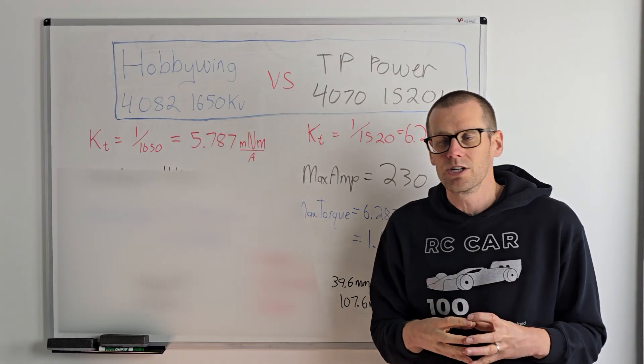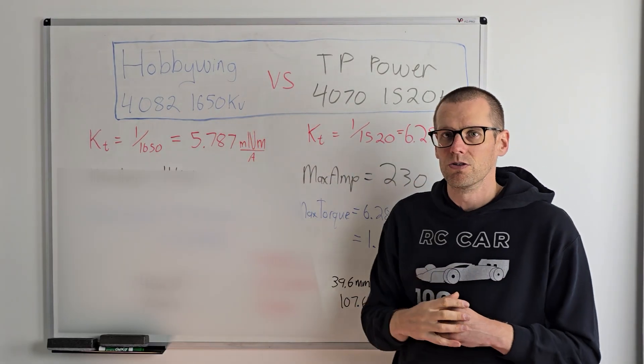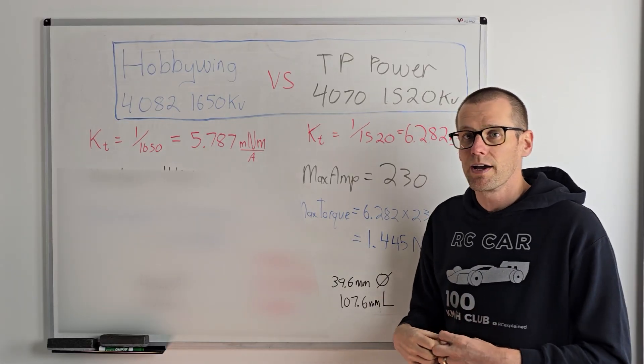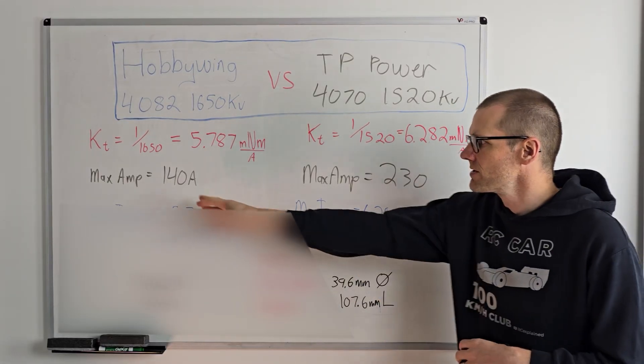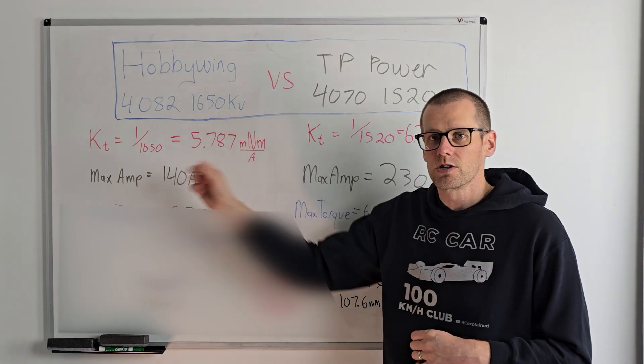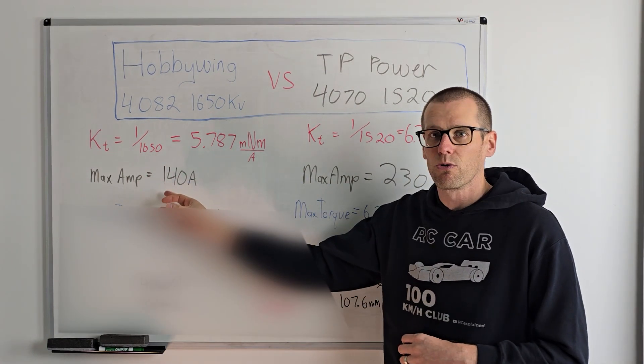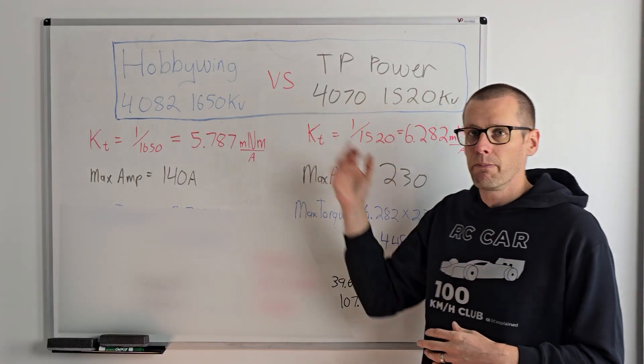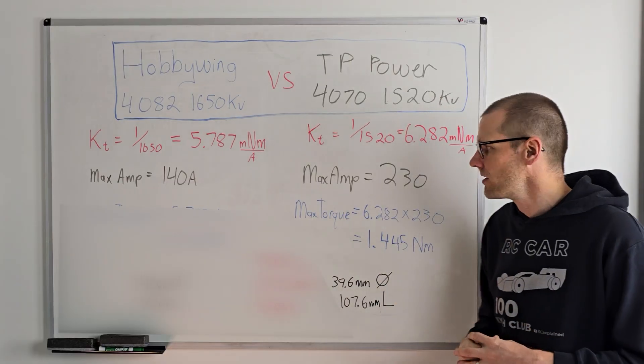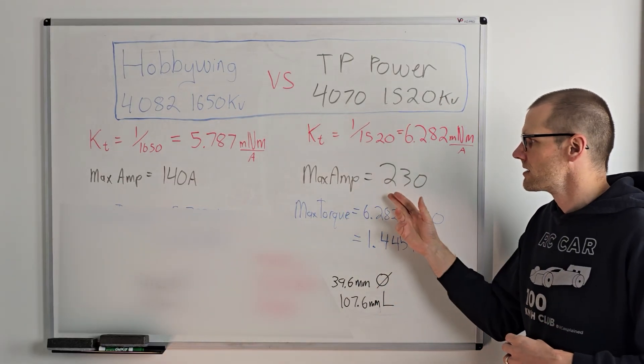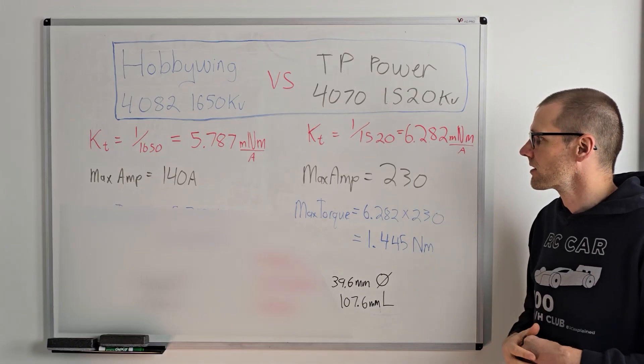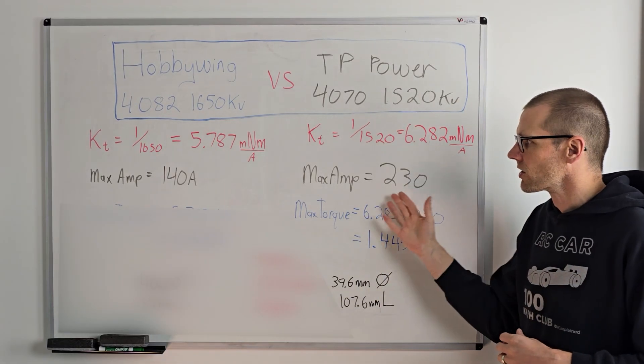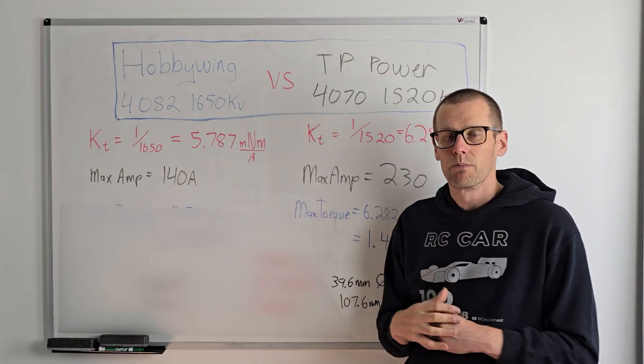Now we go to the spec sheets and I found on the Hobbywing 4082, something similar was found on a different brushless motor because I couldn't find exact specs there. In terms of max current for this brushless motor, the maximum current is going to be 140 amps on that particular motor. And when we look at the TP power brushless motor, the max current that's listed as the spec there is going to be 230 on this particular brushless motor. So we got a drastic difference here when we look at the current between both of these brushless motors.